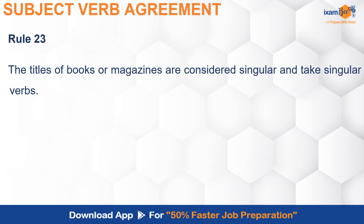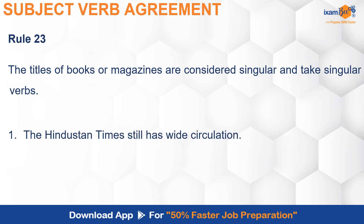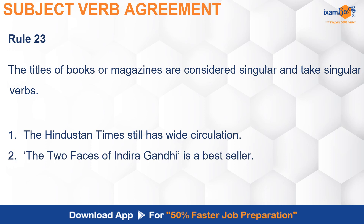The next rule says that titles of books or magazines are considered singular and always take singular verbs. For example: 'The Hindustan Times still has wide circulation.' Similarly, 'The Two Faces of Indira Gandhi is a bestseller' — because the full title 'The Two Faces of Indira Gandhi' is a book, so the verb 'is' is used with it.